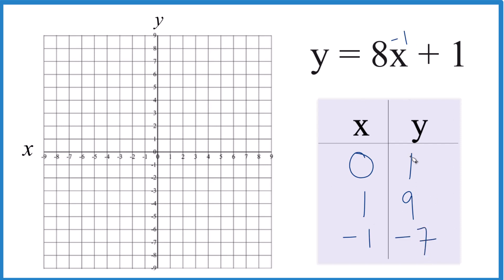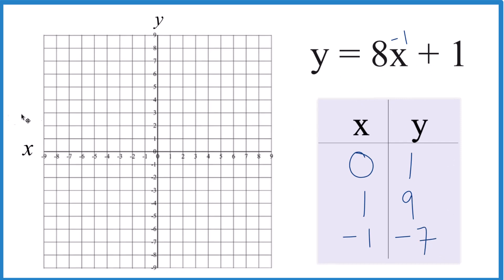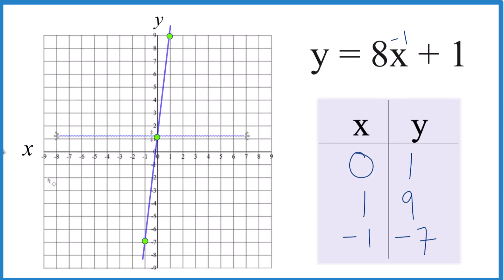Now we have our points. We can graph the linear equation y equals 8x plus 1. So we graph x = 0, y = 1 — that's our first point. Then x = 1, y = 9, which is way up here. And our last point: x = negative 1, y = negative 7. You can see they all line up. Let's put a line through that, and put arrows on the ends to show it goes to infinity.